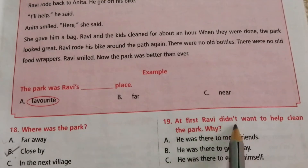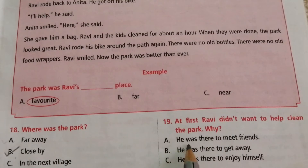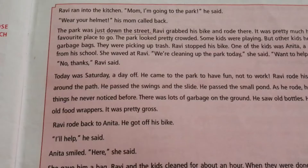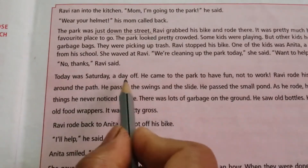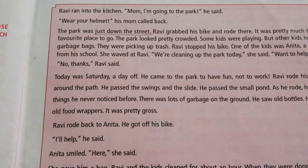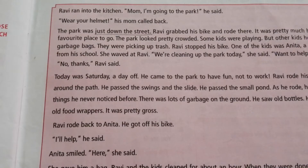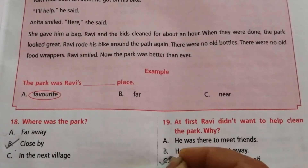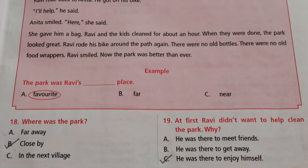Question 19: At first, Ravi did not want to help clean the park. Why? Options are: he was there to meet friends, he was there to get away, he was there to enjoy himself. From the passage: 'Today was Saturday, a day off. He came to the park to have fun, not to work.' That means he wanted to enjoy himself. The answer is C.